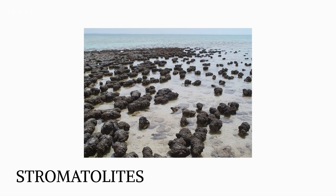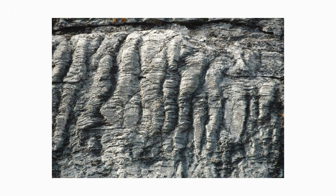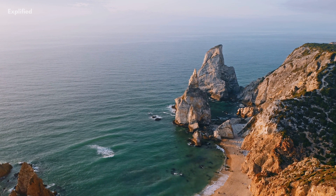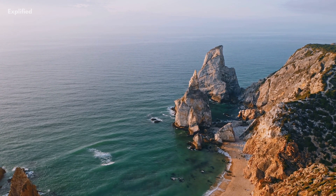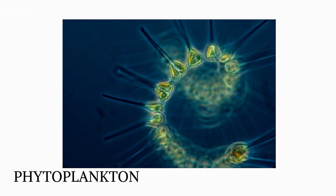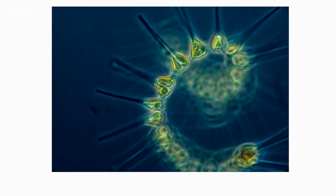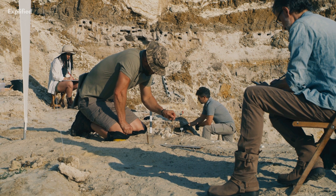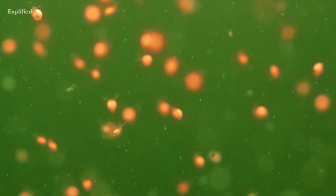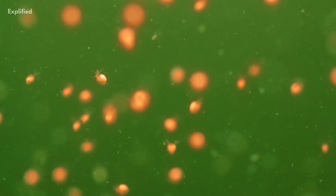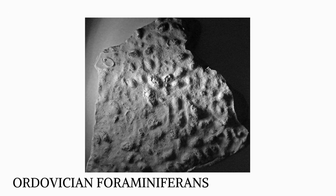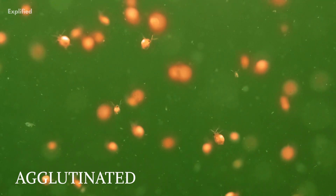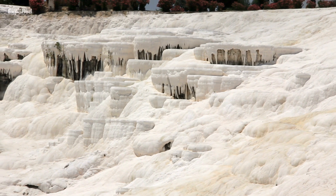Stromatolites — calcified microbial mats — are discovered in Ordovician rocks, though they are not as numerous as in Proterozoic Aeon and Cambrian period strata. Phytoplankton is represented by Chitinozoans or Acritarchs, which have left microfossils with a hollow interior and organic walls; these are small, free-floating, photosynthetic organisms. Ordovician foraminiferans include the earliest fusulinids, as well as agglutinated (glued or cemented) and calcareous forms.